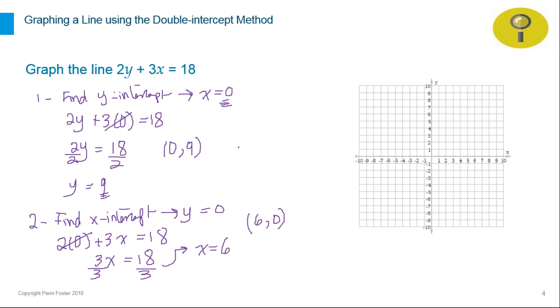So we have (0, 9) and (6, 0). We will plot these points now on the plane. One point will be here where the line intersects the y-axis. The second point, (6, 0), is where the line intersects the x-axis. And the last step is to connect the line.